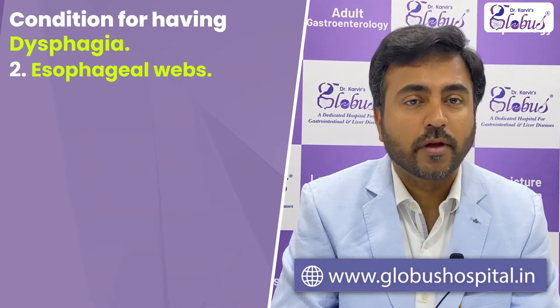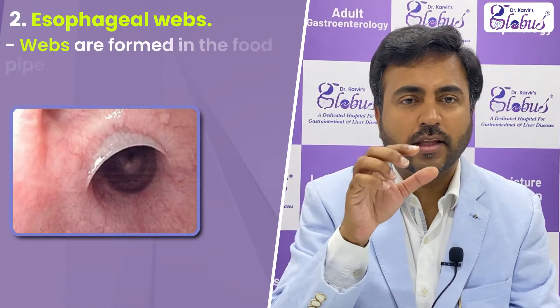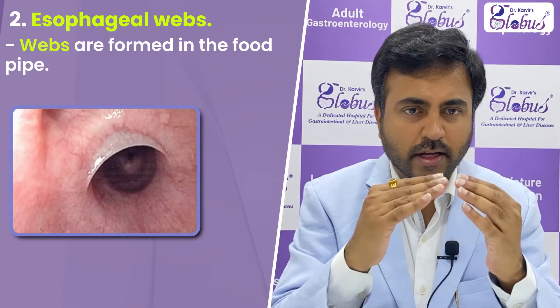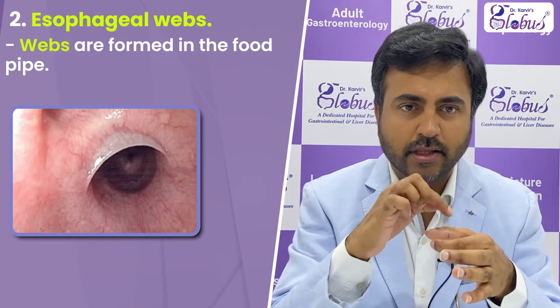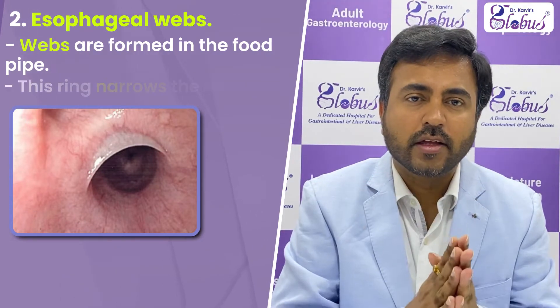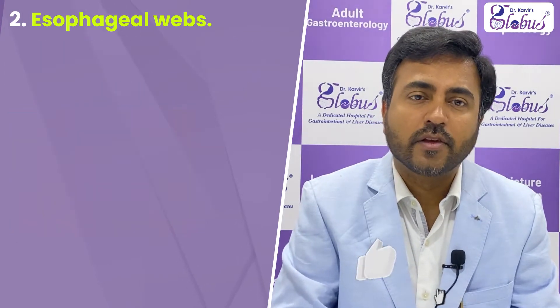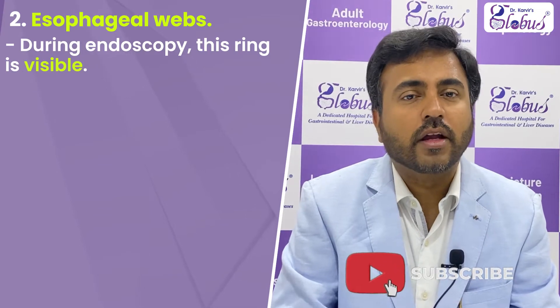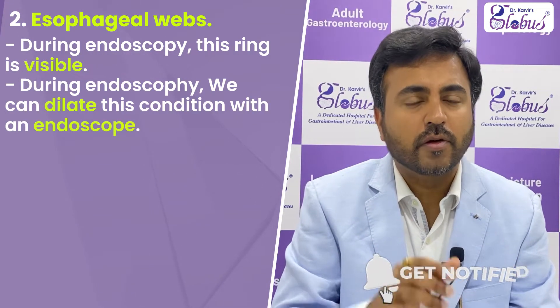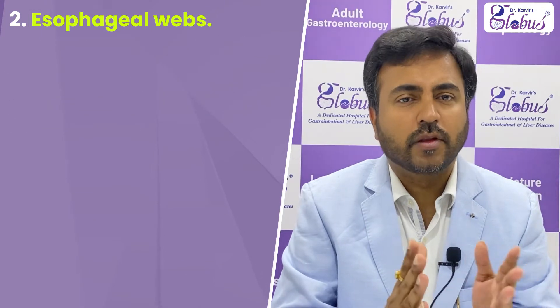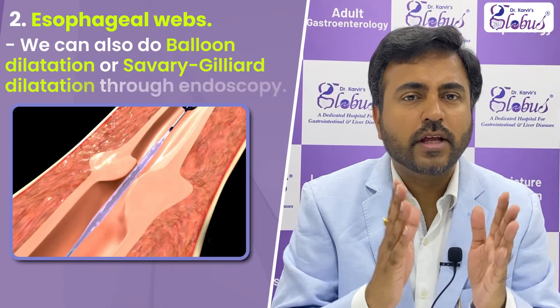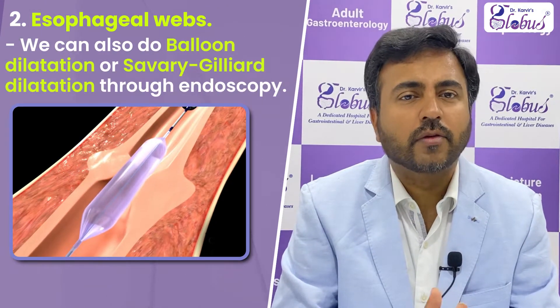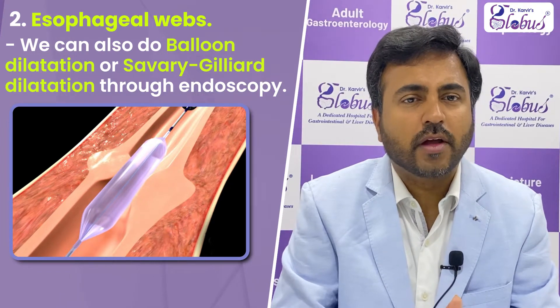Moving to the next condition, that is called esophageal webs. It means there are webs within the mucosa — a ring — and this ring is small. When we do endoscopy, we identify this ring and can dilate it using the endoscope.